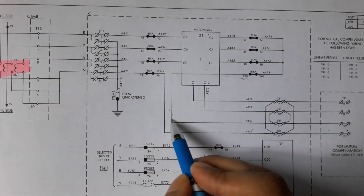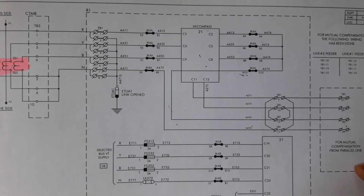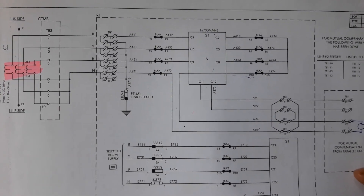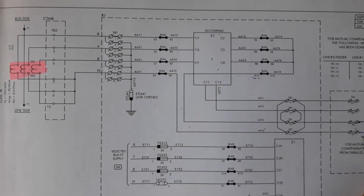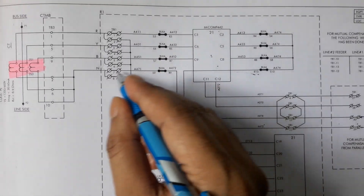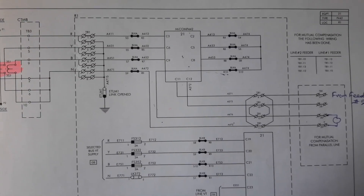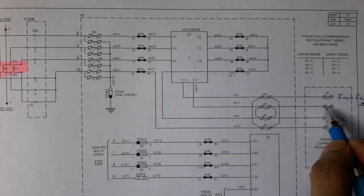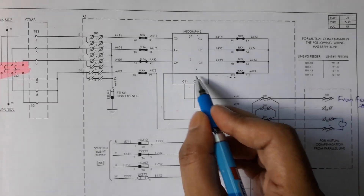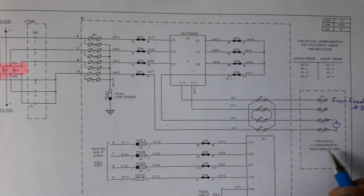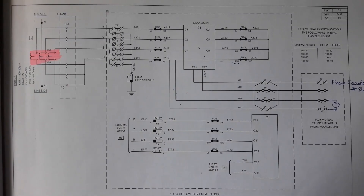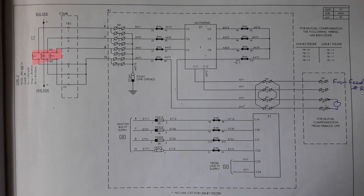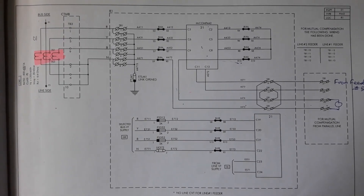The neutral connection of feeder 1 will go to feeder 2, pass through its mutual compensating coil, and return to feeder 1. Similarly, the neutral connection of feeder 2 goes to feeder 1 and passes through its mutual compensating coil. If a parallel circuit is not present, mutual compensation is not required.